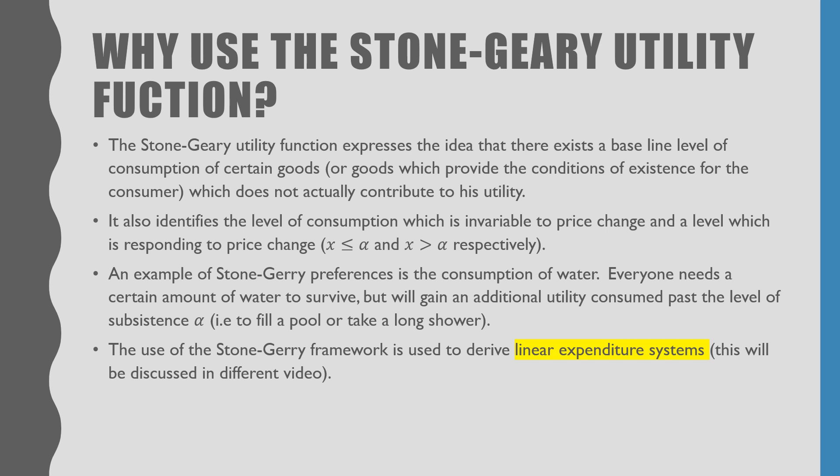An example of Stone-Geary preferences is in the consumption of water. Everyone needs a certain amount of water to survive, but will gain additional utility if consumed past the level of subsistence Alpha — for example, to fill a pool or to take a long shower.